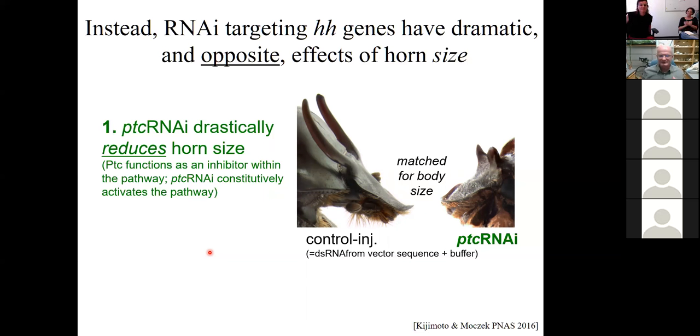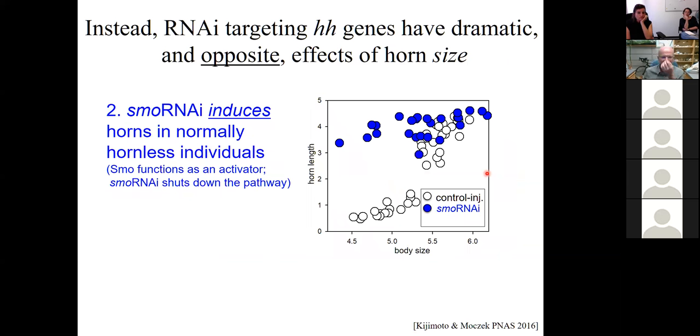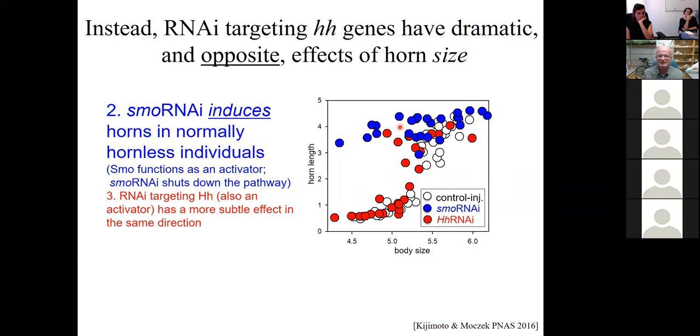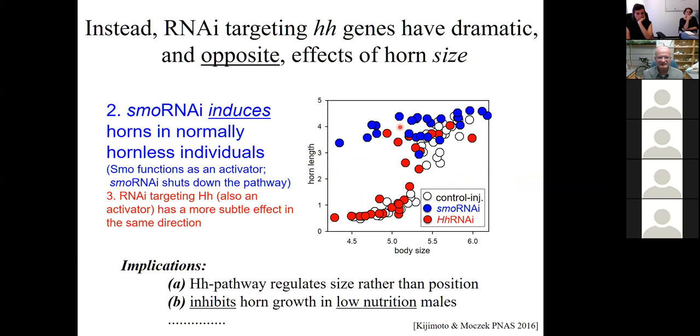The first gene we knock down is patched. Patched within that pathway functions as an inhibitor. So if you knock down an inhibitor, the result is the constitutive activation of the pathway. Now the pathway is active in everybody. And what happens? Large males lose their horns. That was weird. Then we knock down smoothened. Smoothened is positioned in the pathway in such a way that it acts as an activator. So if you knock down an activator, you now shut down the pathway in all individuals. We shut down the pathway in all individuals and small males make big horns. That was crazy. We see the same effect when we knock down hedgehog itself. So this tells us that the hedgehog pathway regulates size rather than position and that it actively inhibits horn growth in low nutrition individuals. It is not like low nutrition individuals are somehow not able to make horns. Instead, they're actively prevented from doing so.